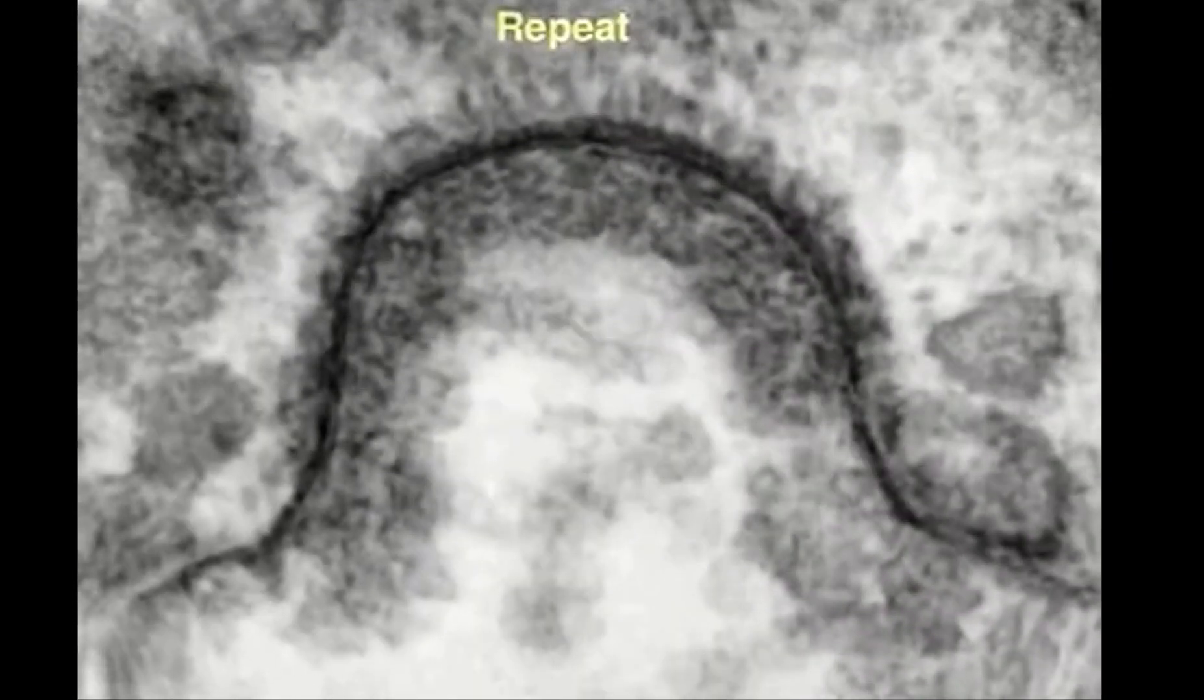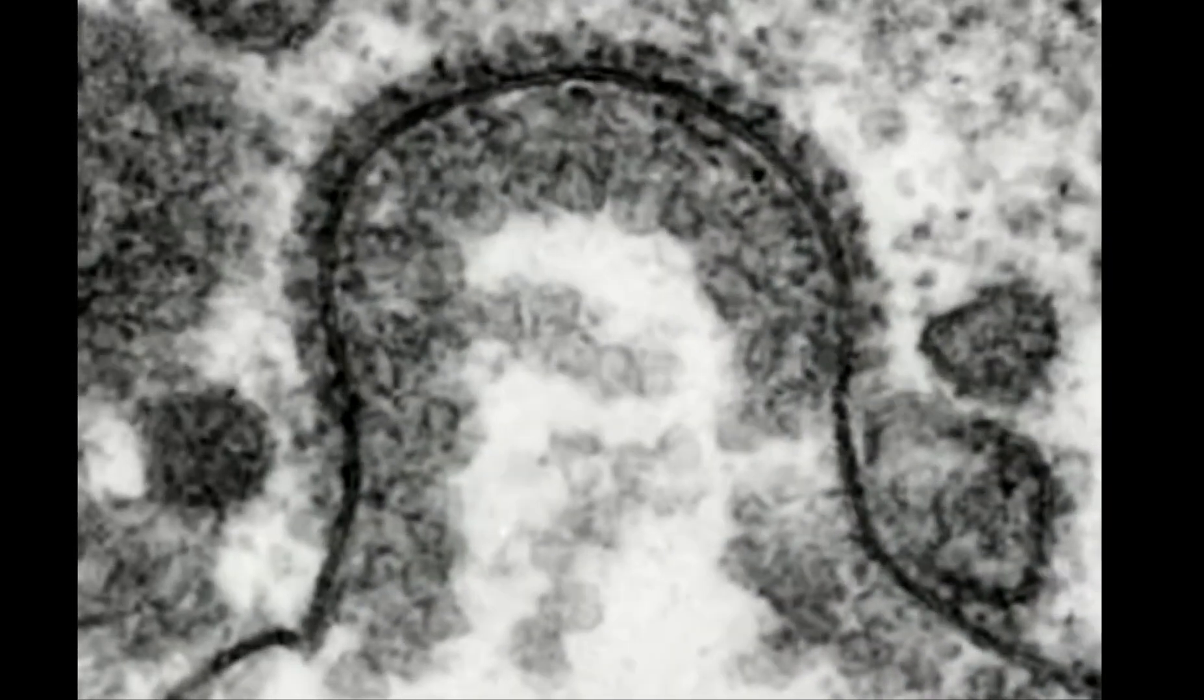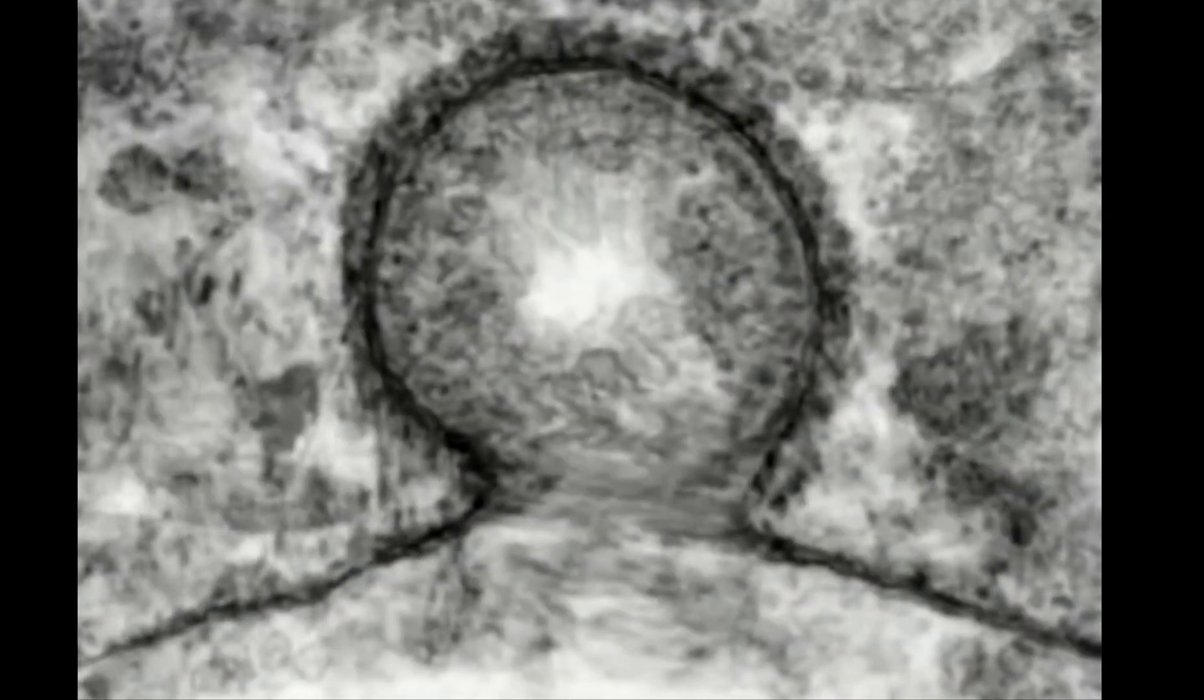This movie shows a series of electron micrographs that have been artificially morphed to show the process of endocytosis as it may occur.